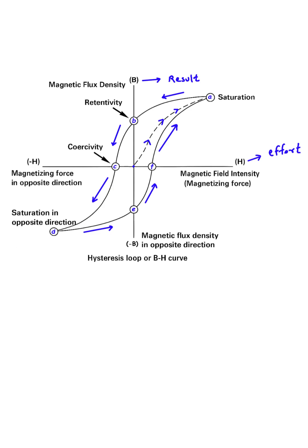We then need to apply a positive effort to bring it back to zero at point F, and finally, we return to saturation at point A, completing the loop.